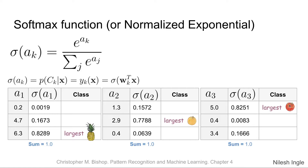That's a summary of how logistic regression works in classification problems. Scikit-learn has functions for both binary classification with just two classes and multi-class classification using the softmax function.